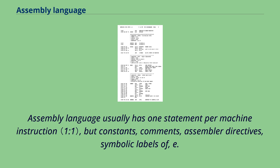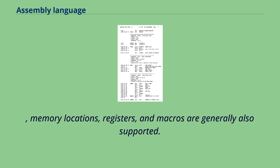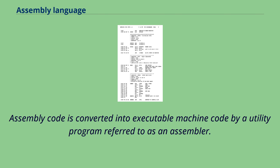Assembly language usually has one statement per machine instruction, but constants, comments, assembler directives, symbolic labels, memory locations, registers, and macros are generally also supported. Assembly code is converted into executable machine code by a utility program referred to as an assembler.